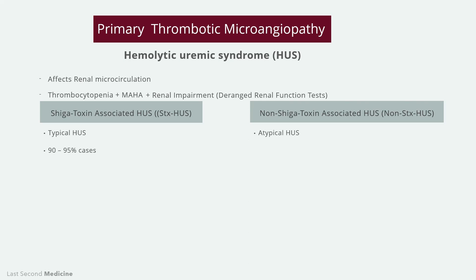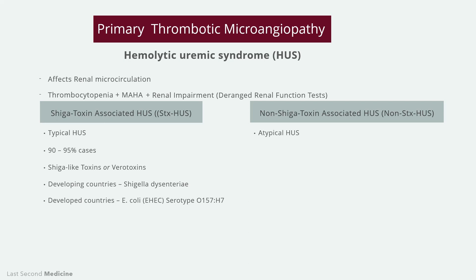Shiga toxin-associated HUS is caused by infection with organisms that produce enterotoxins called Shiga-like toxins or verotoxins. In developing countries, this commonly occurs with Shigella dysentery-associated diarrhea, while in developed countries, it is more common due to infection with enterohemorrhagic E. coli. The E. coli serotype O157:H7 is the best known, but other serotypes that produce verotoxins may also be responsible. Although these bacteria live as commensals in the gut of cattle and other livestock, they can cause hemorrhagic diarrhea in humans when infection is contracted from contaminated food products, water, or other infected individuals.